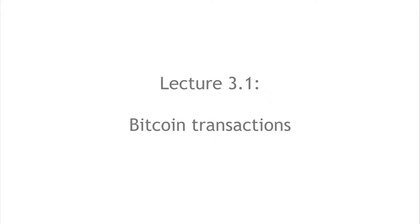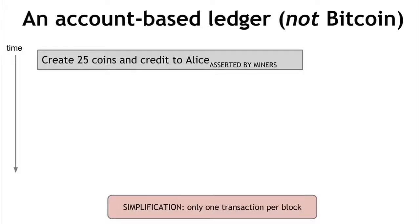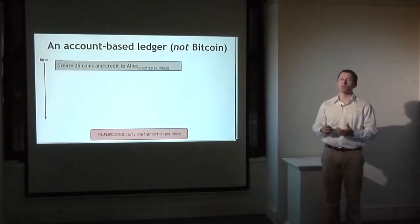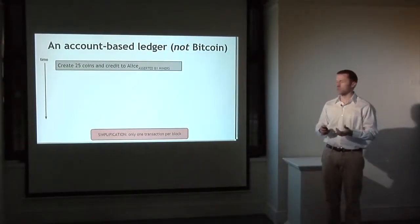We'll start by looking at transactions in Bitcoin. Transactions are really the fundamental building block on which the whole currency is going to be based. We have this append-only ledger where as time goes on we just add more and more units to it. We'll take a simplified model here where instead of having blocks we just have individual transactions being added to the ledger one at a time. The first model you might think of — which is a lot of people's mental model for how Bitcoin works — is an account-based system.